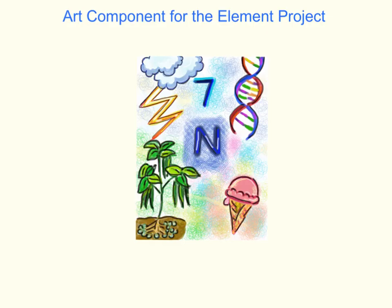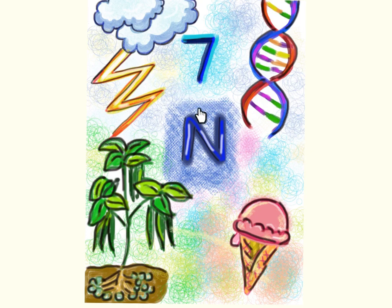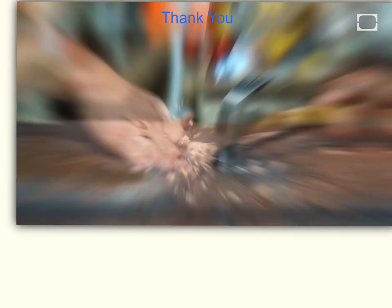This digital artwork for nitrogen was created using the Brushes app. The blue color and the symbol represent that nitrogen is 78% of the atmosphere. The atomic number is shown, and the lightning and the pea plant represent the nitrogen cycle. The DNA represents that nitrogen is important to life since it's a part of amino acids. And here is liquid nitrogen ice cream. Thank you.